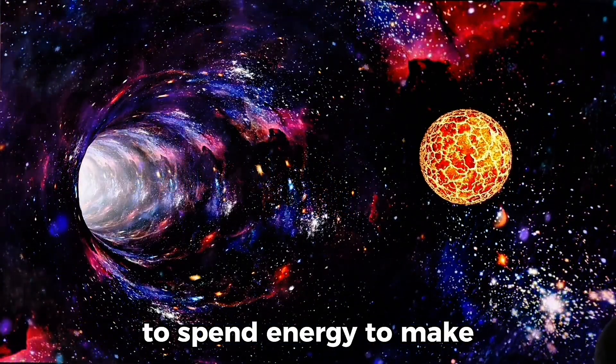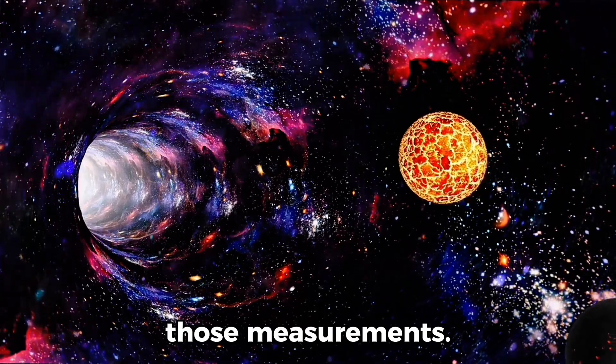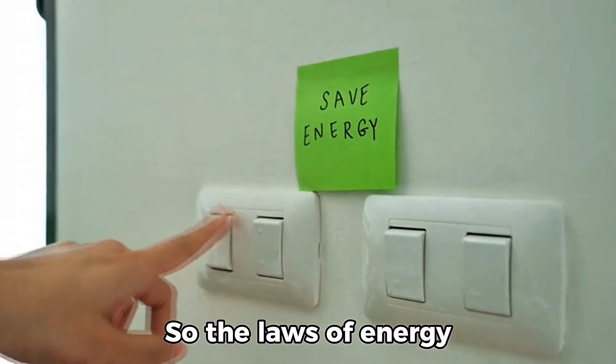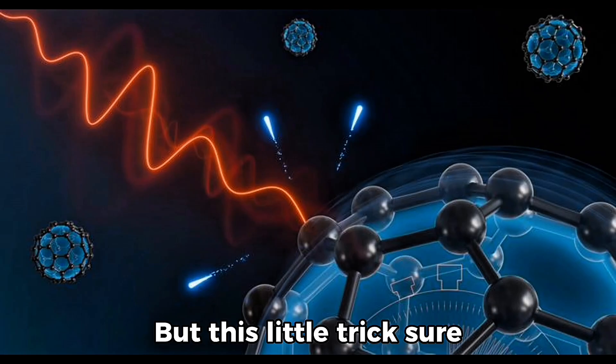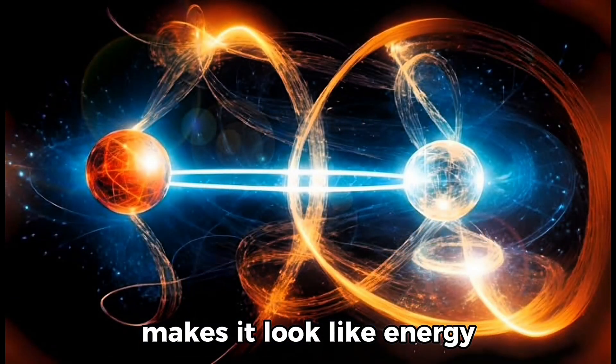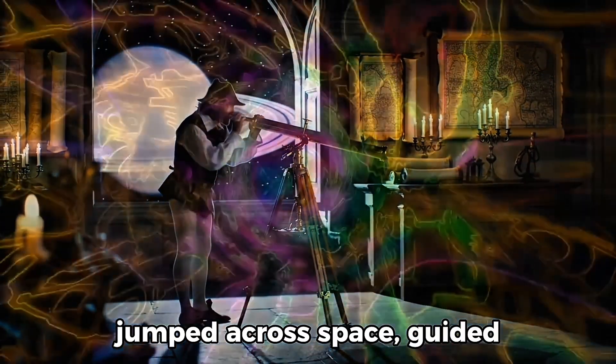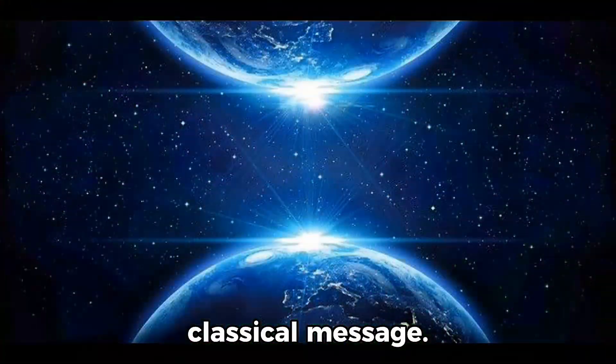It looks like energy has been teleported from Alice to Bob. Importantly, Alice had to spend energy to make those measurements. So, the laws of energy conservation aren't broken. But this little trick sure makes it look like energy jumped across space, guided only by entanglement and a classical message.